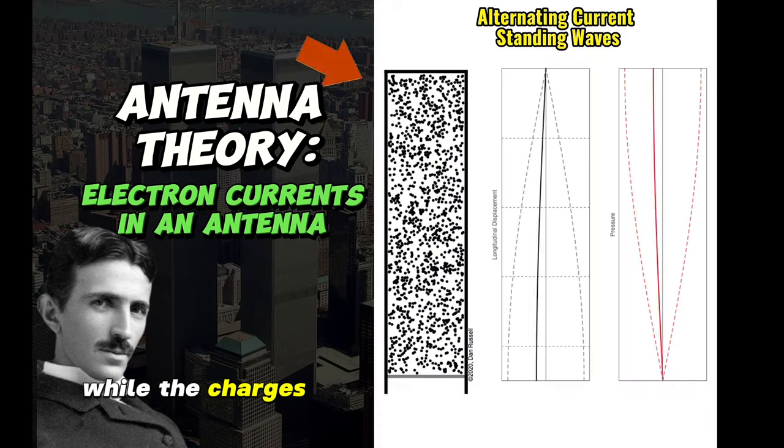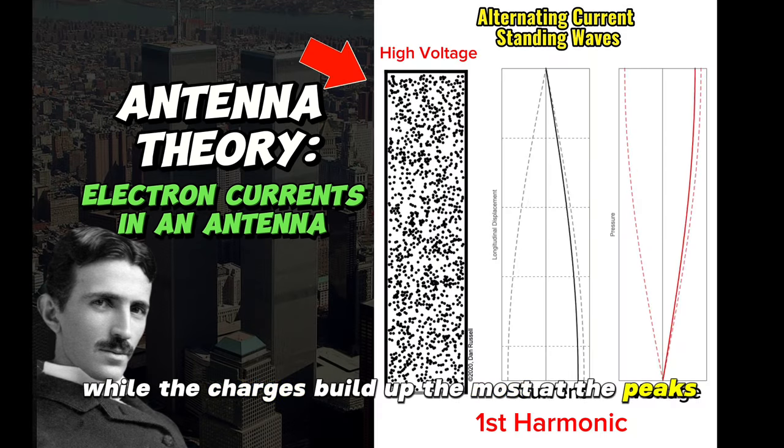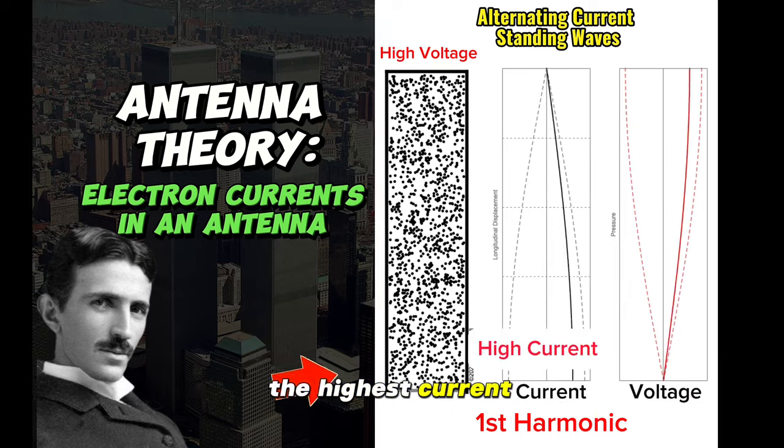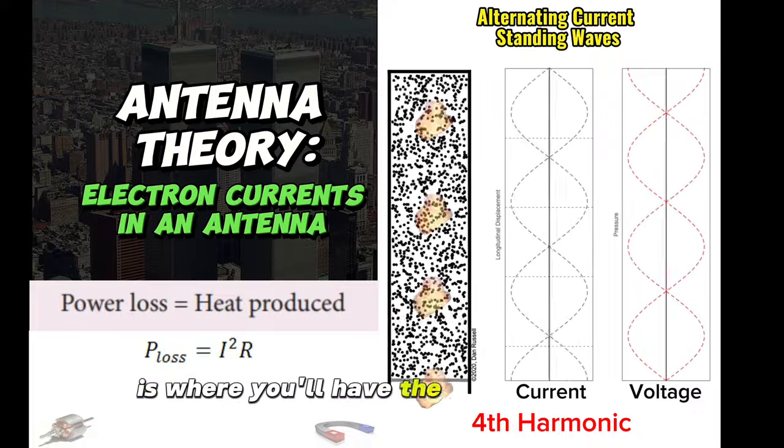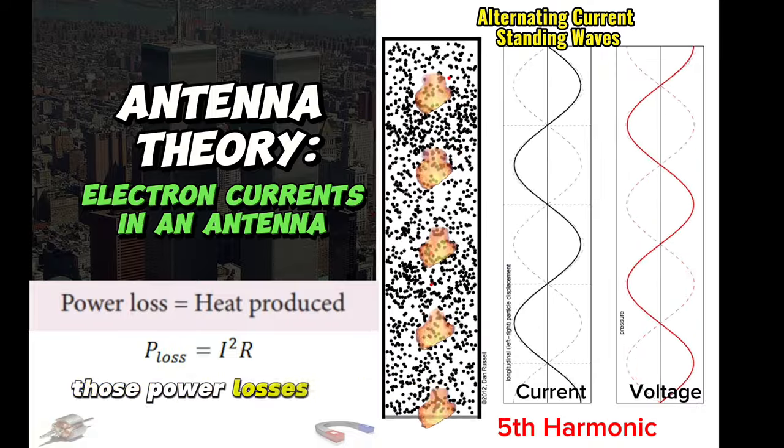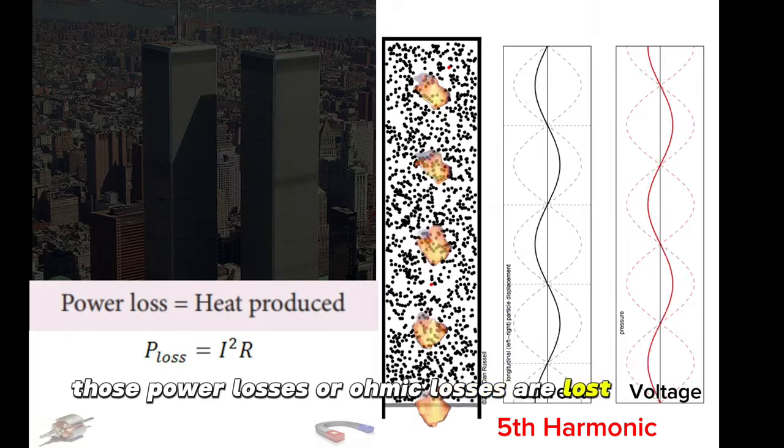While the charges build up the most at the peaks, the highest current is where the electrons are moving the most. Where the electrons are moving the most is where you'll have the highest current power losses. Like in transmission, those power losses are ohmic losses and are lost to heat.